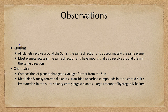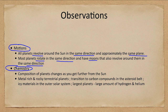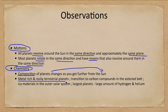We have to start off, as we do when we try to make some kind of model of things, by looking at what we know. What do we know about the motions of the solar system? All planets revolve around the Sun in the same direction and approximately the same plane — the solar system is very flat. Most planets rotate in the same direction as well, and have moons that revolve around them in the same direction. There is definitely a direction to the solar system. When we look at the chemistry, we see that the composition changes as you get further from the Sun — close to the Sun we have metal and rocky terrestrial planets, and then icy materials in the outer solar system.